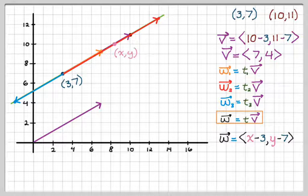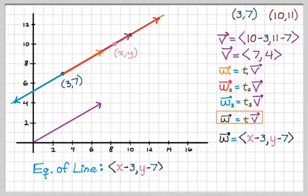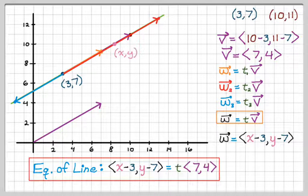And then if I go back to this equation in the box, w is equal to t times v, I can write the equation of the line. So the equation of the line is going to look like x minus 3 comma y minus 7, so that's one vector. And it has to be a scalar multiple of 7, 4, so t times 7, 4. That's actually the vector equation of the line.